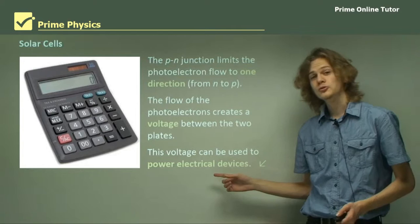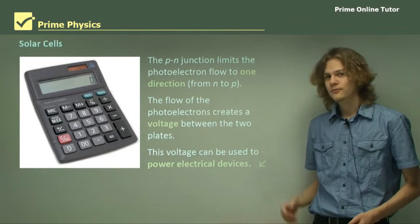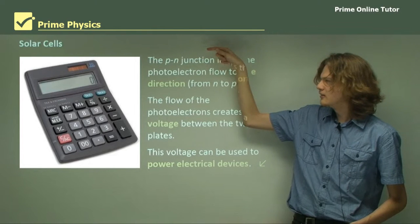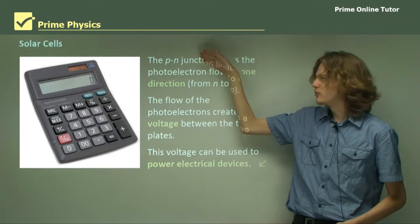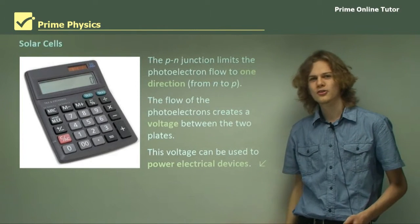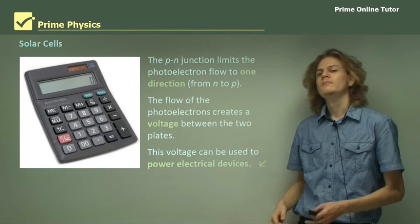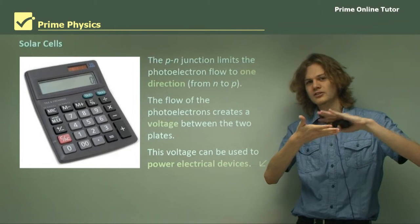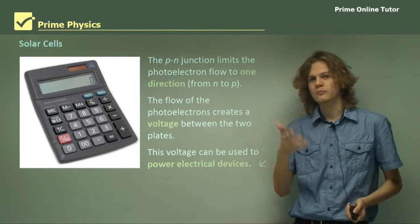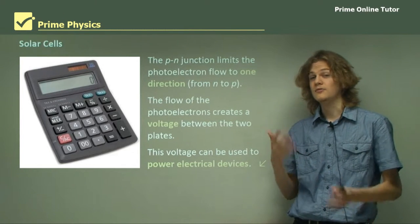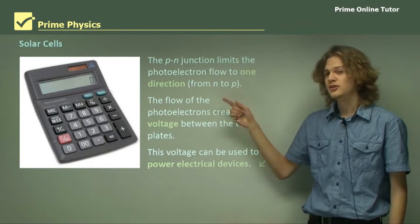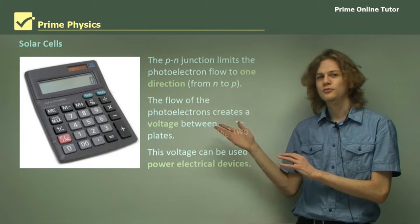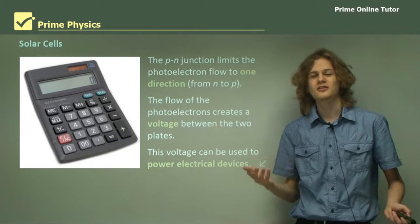This voltage can be used to power electrical devices. In this picture of a calculator, we can see a tiny little grid of photovoltaic cells right at the top. These are examples of solar cells — sandwiched semiconductors which, when ultraviolet light from the sun shines on them, can charge the battery inside. This means you can continue using these calculators for a long time without having to worry about charging the batteries yourself.